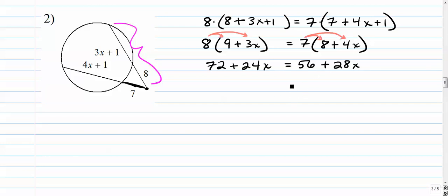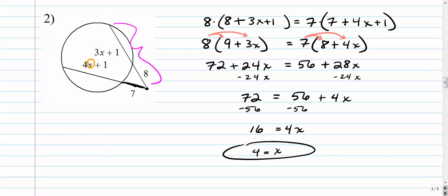We have variables on both sides so I'm going to leave the variable expression with the larger coefficient where it is. I'm going to move the other one over. So I'm going to subtract 24x from both sides. That leaves me with 72 equals 56 plus 4x. Get the 56 over to the left by subtraction. That'll give us 16 is equal to 4x. x is 4. Cool. And you can check that, of course, by plugging 4 back in here and in here to see if it works. I'll let you do that on your own.